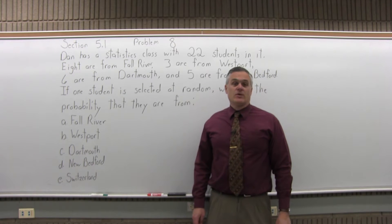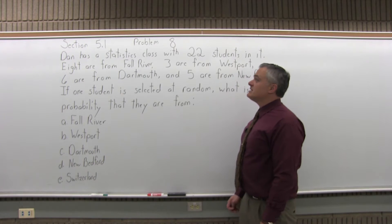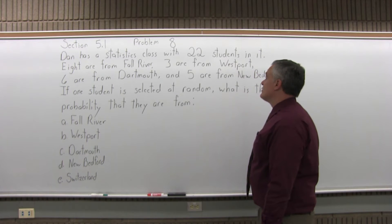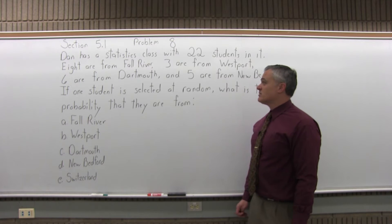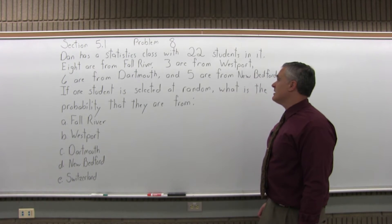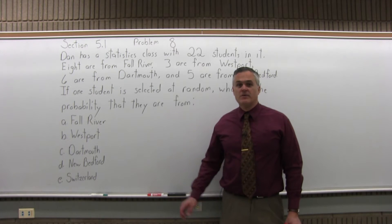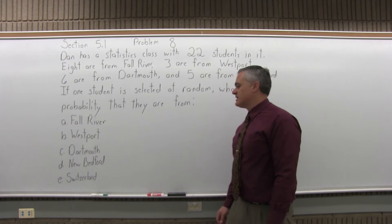This is Section 5.1, Problem 8. It says, Dan has a statistics class with 22 students in it. Eight are from Fall River, three are from Westport, six are from Dartmouth, and five are from New Bedford. If one student is selected at random, what is the probability that they are from? And then the question lists the different places they can come from.